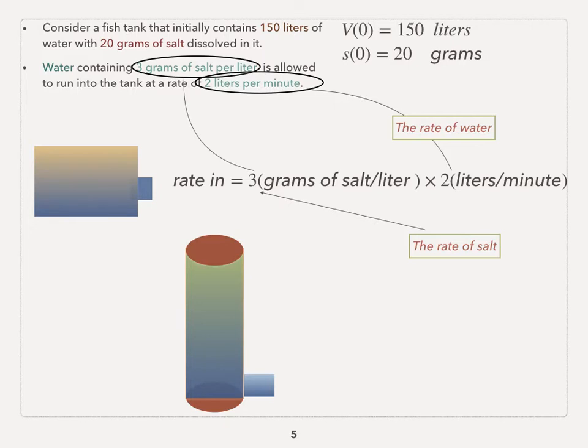The rate in now is 3 times 2, which is 6. And if you combine the two units together, the units for the rate in is grams over minutes, which makes sense. We want to model the amount of salt in grams over the time t, which is grams over minutes. That's rate in.